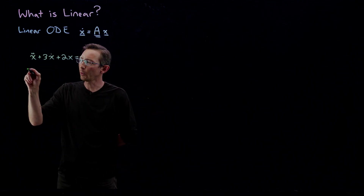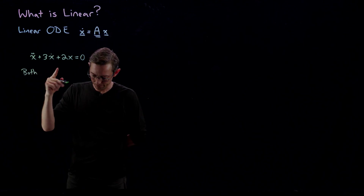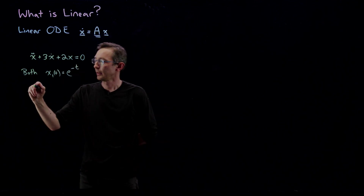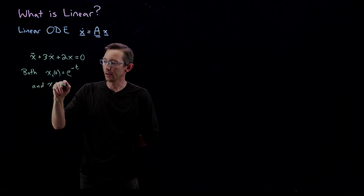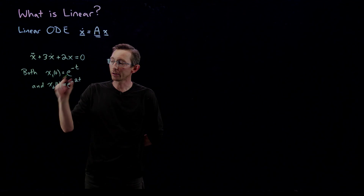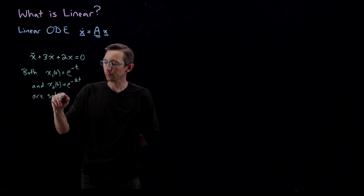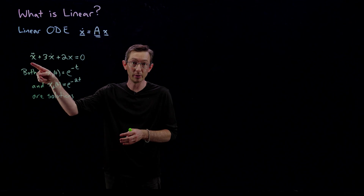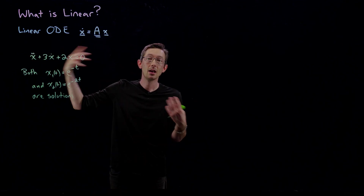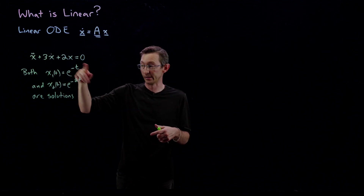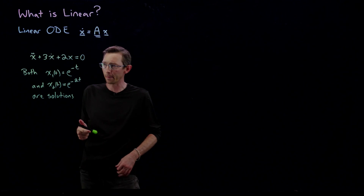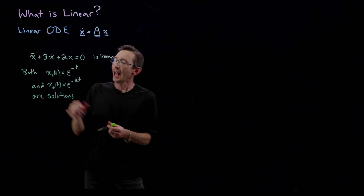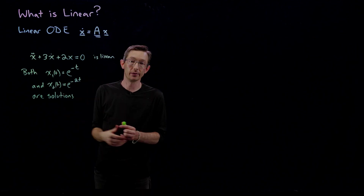We know that x₁(t) = e^(−t) and x₂(t) = e^(−2t) are both solutions. You can verify this by computing the characteristic polynomial: λ² + 3λ + 2 = 0, which has roots λ = −1 and λ = −2. These give the two fundamental solutions of this differential equation. And because this differential equation is linear, any combination of these two solutions is also a solution.